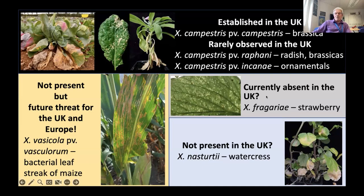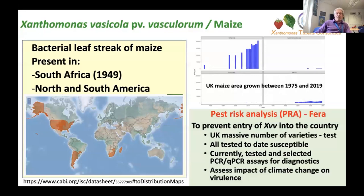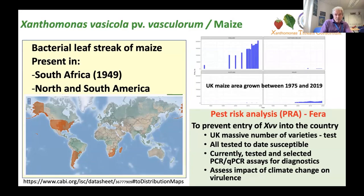Similarly, Xanthomonas on strawberries — particularly up in Scotland, we're producing at least 30 to 40% of our own strawberries now. And another one, probably not considered so important, is the watercress pathogen, which is also Xanthomonas. Those are the ones we're focusing on in the project. Bacterial leaf streak of maize is important in the UK because maize production has increased 300% over the last 15 to 20 years, partly driven by biofuels. The UK uses a massive variety of different maize seed, and FERA is developing pest risk analysis while we test the maize varieties.